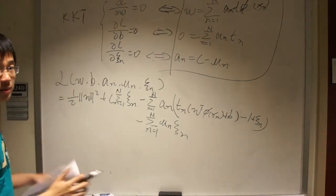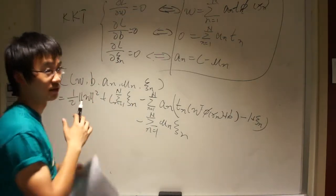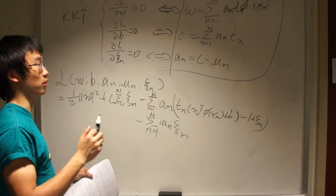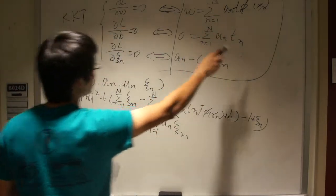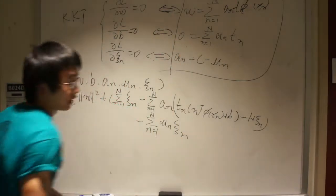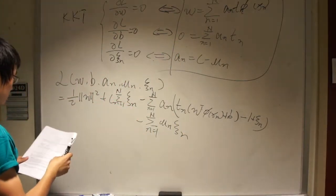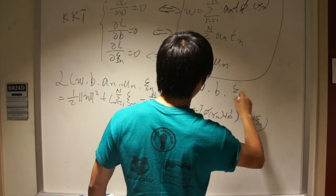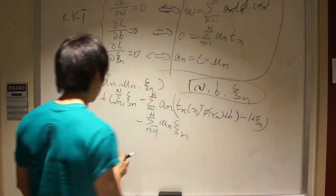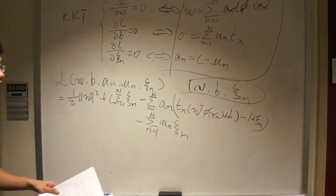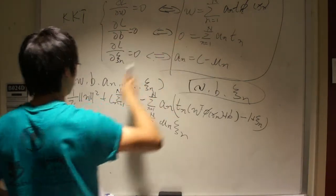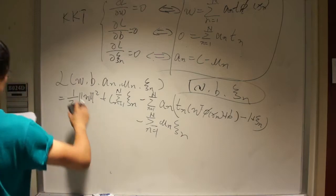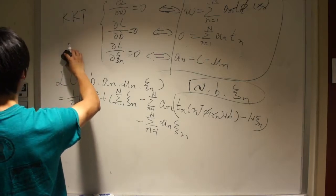From the KKT conditions, we get: partial L over partial W equals zero, partial L over partial B equals zero, and partial L over partial xi_n equals zero. From these, we get: W equals the summation from n=1 to N of A_n T_n X_n; the summation of A_n T_n equals zero; and A_n equals C minus mu_n.